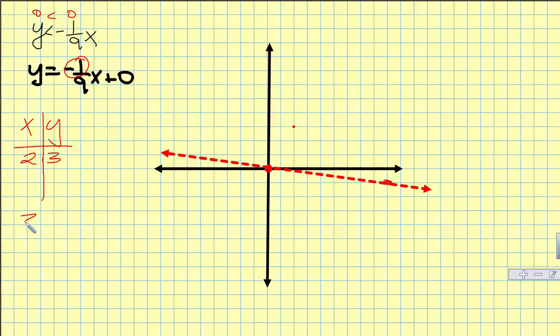Now you plug it in and you want to know if it's a true statement. So y, which is 3, is less than negative 1/9 times x, which is 2. My question is: is 3 less than negative 2/9? Well, this is false, so that means that this point is not a solution.